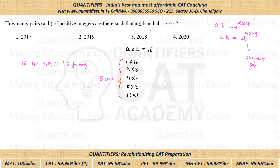Now, what you need to see here is that one of the cases would be such that A and B are both equal. There will definitely be a case where both are equal. Now out of the remaining cases, in half of the cases A will be less than B, and in the other half of the cases A will be greater than B.